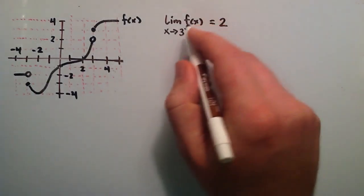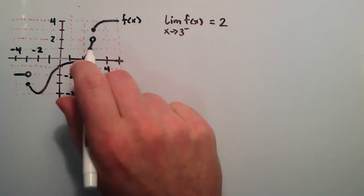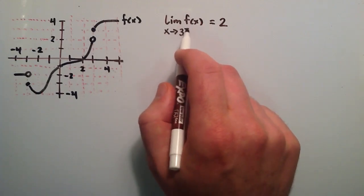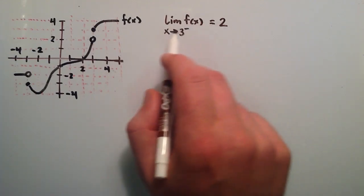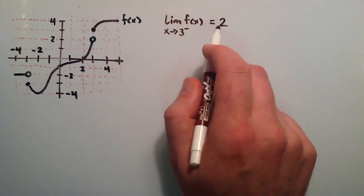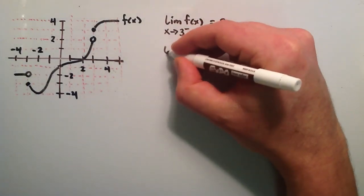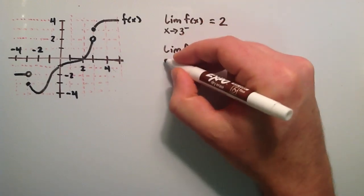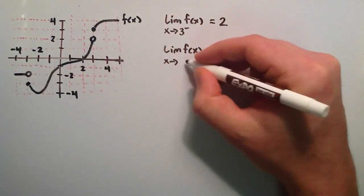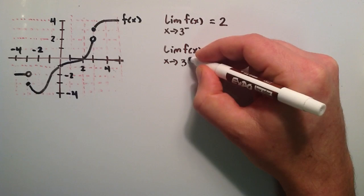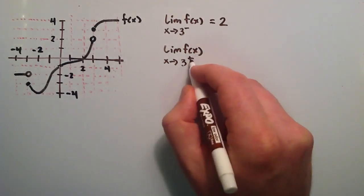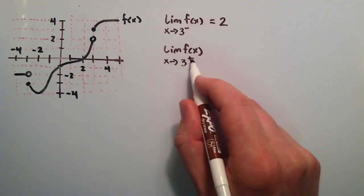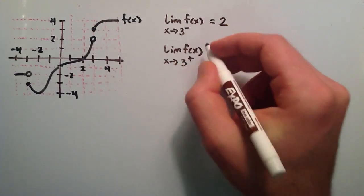Because that's what it looks like as we're approaching from the left, we say that the limit of f of x as x approaches 3 from the left is 2. So the limit exists and it is 2. Now let's take the limit of f of x as x approaches the same value 3, but this time from the right-hand side. The negative superscript means we're approaching from the left, and the positive means we're approaching from the right.